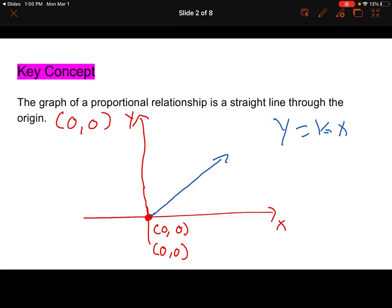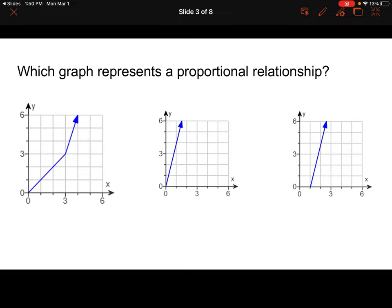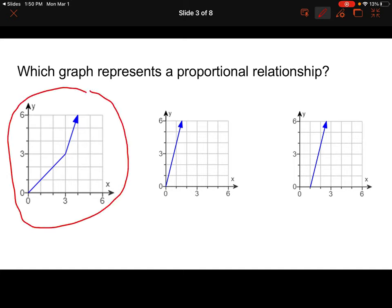So we want to figure out which graph represents a proportional relationship. We should be asking ourselves two questions: Is it a straight line, and does it go through the origin? Let's start with this one on the left. We're going through the origin right here at (0, 0), so it looks good. But we're not a straight line — we have a little bend. So this right here would not be a proportional relationship.